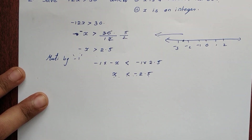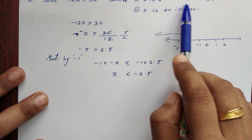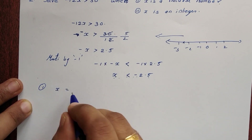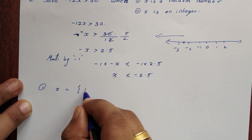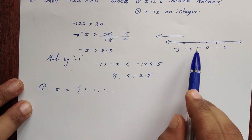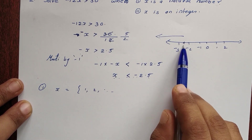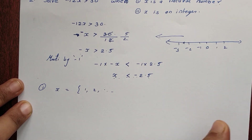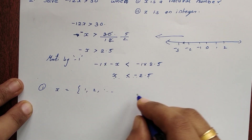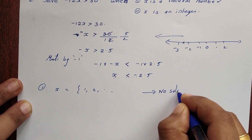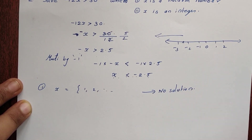First option: x is a natural number. Natural numbers are 1, 2, 3, etc. Since x < -2.5 and natural numbers are all positive, there is no solution.